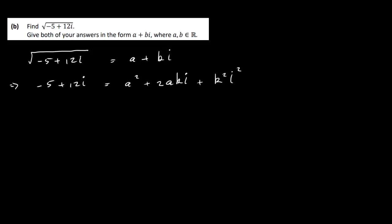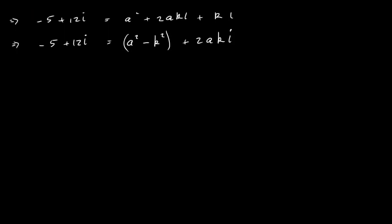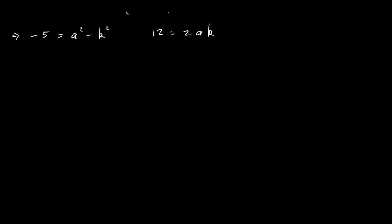Let's put the imaginary parts together and the real parts together on the right-hand side. Since i squared is minus 1, the k squared i squared term becomes minus k squared. So we have a squared minus k squared as the real part and 2ak as the imaginary coefficient. Both sides are in the form a plus bi, so we equate: minus 5 equals a squared minus k squared, and 12 equals 2ak.